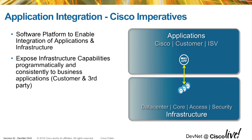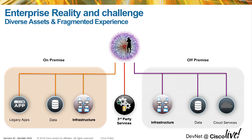Your infrastructure is spread across different parts of the network — data center, WAN, branch — it doesn't matter where the infrastructure is. You want to tie the investment in the infrastructure to the business outcomes. This is how you want to do this.